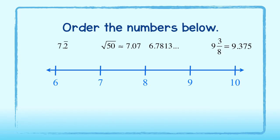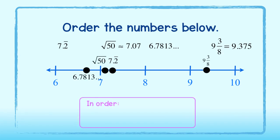Now, we can place them appropriately on the number line. After placing them on the number line, we can see that the correct order of the numbers is 6.7813 repeating, the square root of 50, 7.2 repeating, and 9 and 3 eighths. Good job!